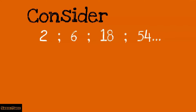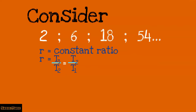Let us consider a geometric sequence 2, 6, 18, 54. Remember, r is the constant ratio. r is term 3 over term 2, or term 2 over term 1, or term 4 over term 3. So r equals 18 over 6, or 6 over 2, both giving a value of 3. The constant ratio is 3.